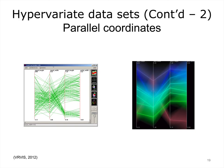Parallel coordinates is another visually compelling way to represent hypervariate data. Similarly to star plots, here each variable receives its own axis as well. However, instead of radiating from a central point, they are shown as parallel lines. Here are some examples of parallel coordinates.